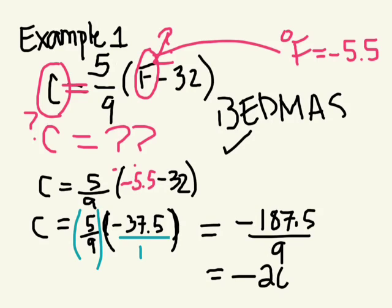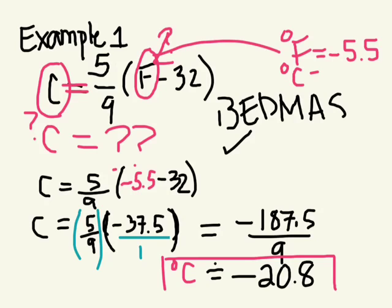Negative 20 point, we'll round off to 8, approximately equal to. So degrees Celsius is negative 20.8 degrees Celsius. So if you see the temperature as negative 5.5 degrees Fahrenheit, you know that's negative 20.8 degrees Celsius.